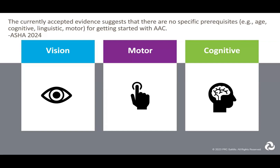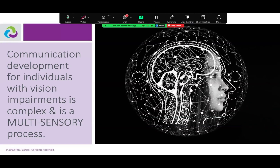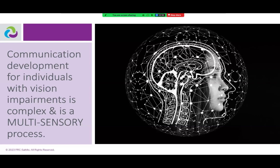When we have someone who has a vision impairment, we have to acknowledge that vision — whether that be someone who is autistic and has a different visual sensory system, maybe they are hyper visually focused or have photophobia, or someone who has cortical or cerebral visual impairments, or someone who has low vision or is blind — all of those things significantly impact communication development as a whole, because communication development is multi-sensory.